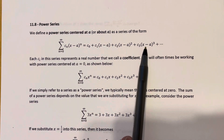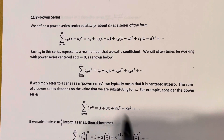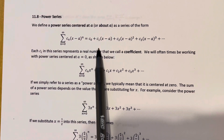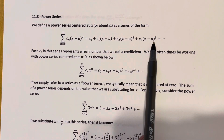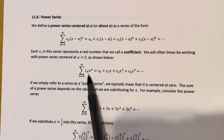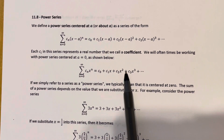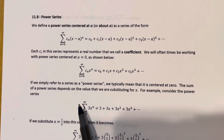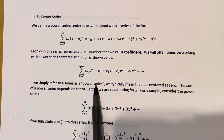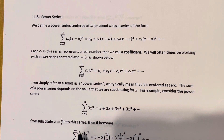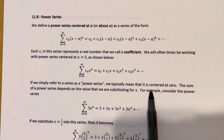This is the most general type of power series, but a lot of the time we intentionally set a equal to zero, which simplifies things. Instead of (x minus a) appearing in parentheses over and over again, we just have x. So it looks like c0 plus c1x plus c2x squared plus c3x cubed, and so on. Sometimes if we say 'power series' without specifying where it's centered, we're implying it's centered at zero.